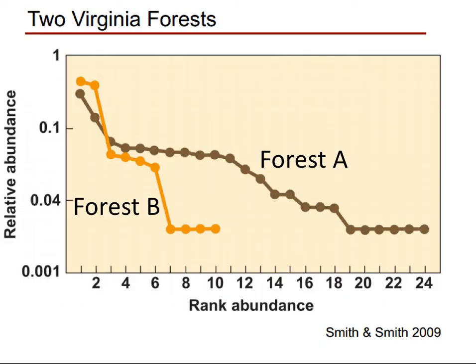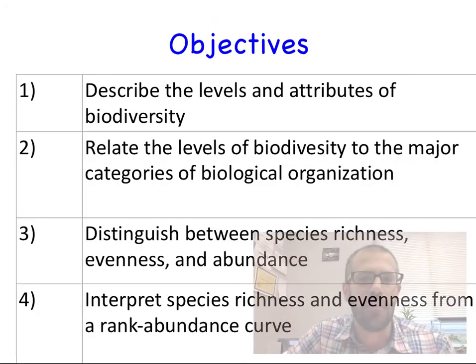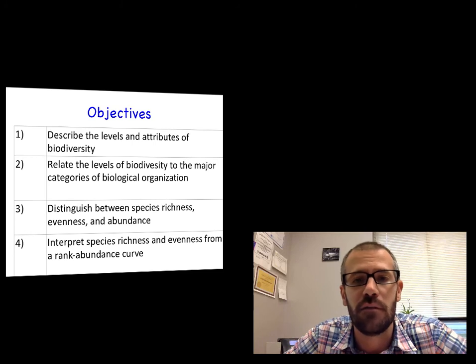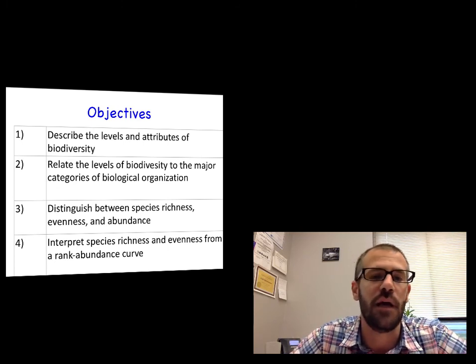Here's another example of a rank abundance curve. Forest A has a higher richness and evenness compared to forest B. The length of the line shows richness: there are 24 species in forest A and only 10 in forest B. The slope of the line shows evenness — forest B's slope is much steeper, so it is less even than forest A. I've shown you two ways ecologists try to quantitatively answer which community is more diverse, but there are many other ways — common indices include the Shannon-Wiener or Simpson's index, and multivariate ordination. I hope you've enjoyed this video. Remember that biodiversity is a measurable but complex term consisting of different levels and attributes. After reviewing this video and performing some additional practice problems, you should be able to accomplish all the objectives listed on this slide. Thanks for watching.